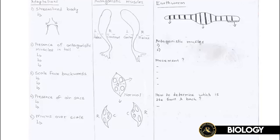To summarize the five adaptations: number one, streamlined body reduces water friction. Number two, antagonistic muscles — myotome — flip the tail left and right to provide forward thrust. Number three, scales facing backwards reduce water tension, protect the fish's body, and reduce hydrostatic pressure. Number four, the air sac provides buoyant force for the fish to float and helps it move fast in water. Number five, mucus over scales protects the fish's underlying body and reduces water tension.